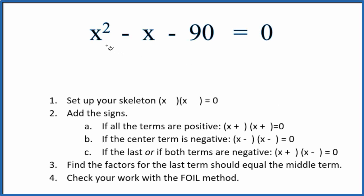In this video we'll factor the equation x squared minus x minus 90 equals 0. We'll use these steps to help us. First let's set up a skeleton equation that looks like this.